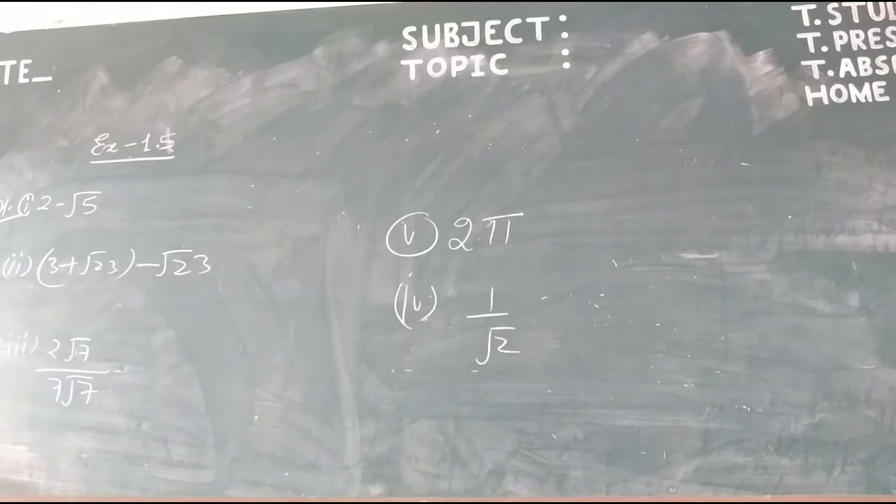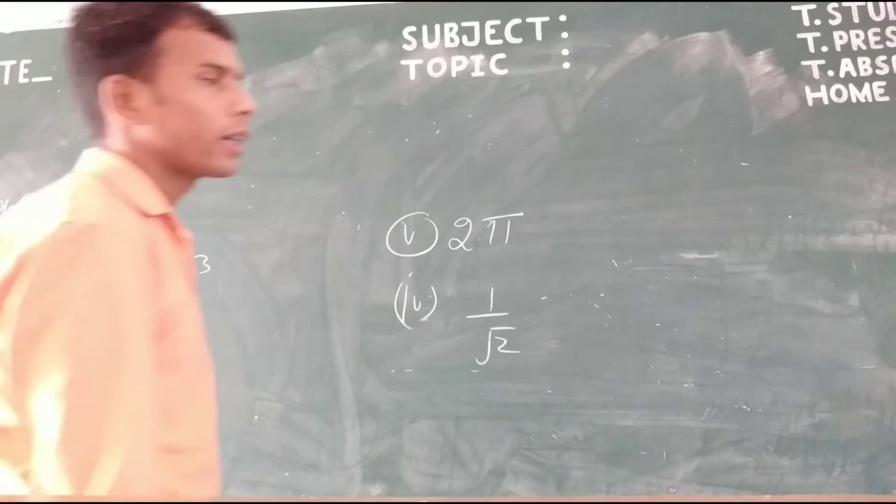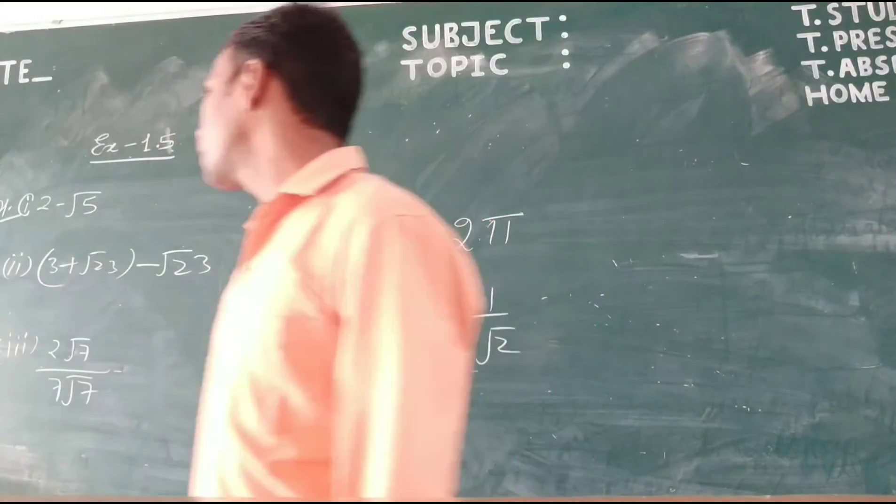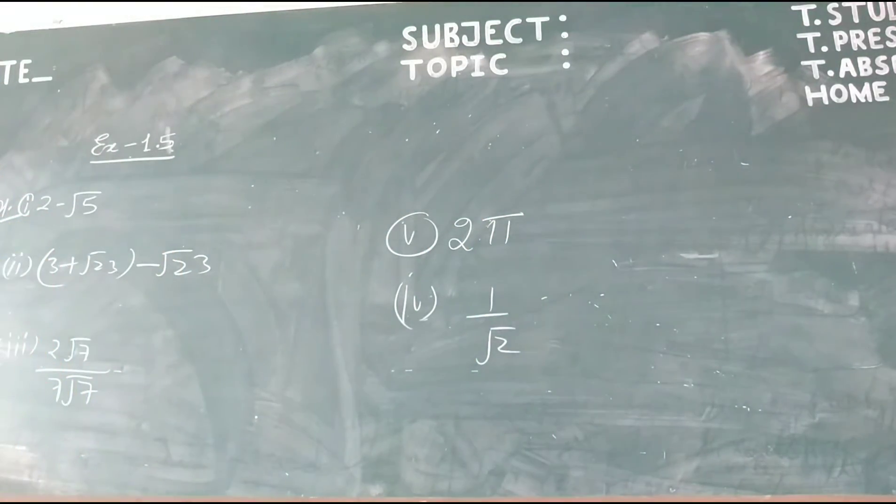We have a given number, we have to find which numbers are rational, which numbers are irrational. So, we take first part, 2 minus root 5. We know that the difference of rational and irrational is always irrational, so this is an irrational number.